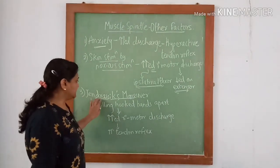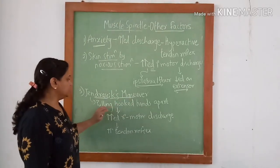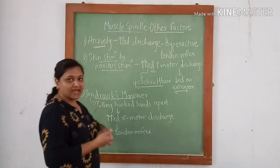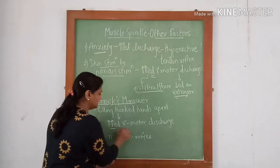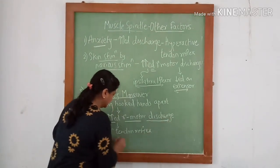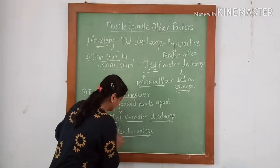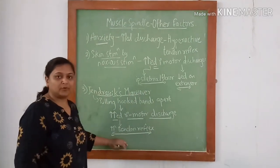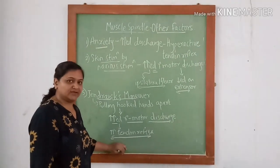Third is the Jendrassik maneuver. Here we pull the hooked hands apart. Thereby there is increased gamma motor discharge and the tendon reflexes increase. This helps in the proper examination of tendon reflexes.